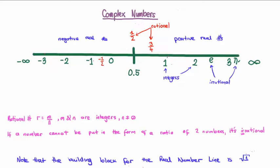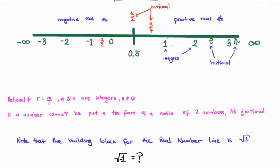So looking at our real number line we have positive 1 times the square root of 1, and we have e times the square root of 1. The thing is though that the real number line doesn't account for or allow us to discuss the square root of a negative number.